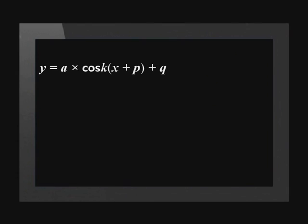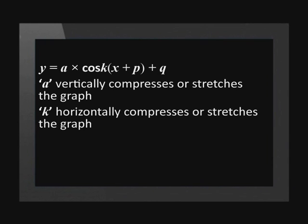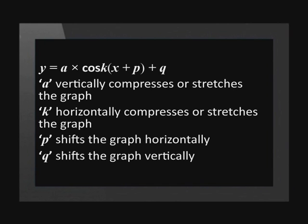Let's go over what we've learned so far. In the formula y equals a times cos(kx plus p) plus q: a vertically compresses or stretches the graph, k horizontally compresses or stretches it, p shifts the graph horizontally, and q shifts the graph vertically. All these variables can make the formula look confusing, but you should only ever be asked to work with two variables at a time. Just memorize the effect each one has on the graph and you'll do fine.